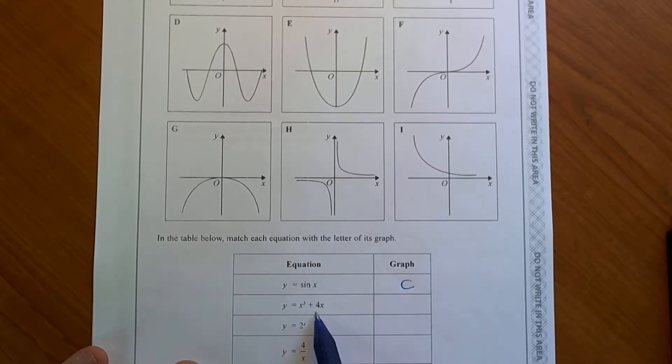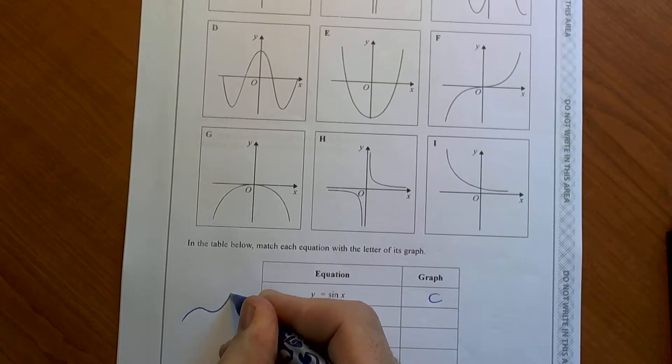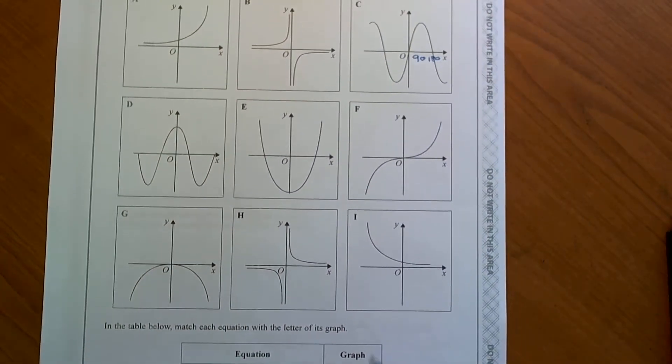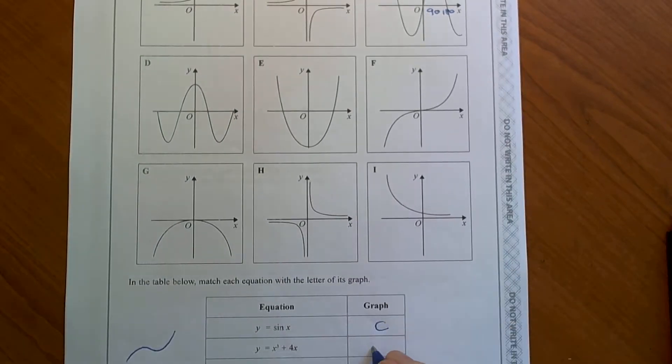The cubic graph - if we're looking for a cubic graph, it's going to look something like that. So let's look through, and the only one that fits is going to be F.